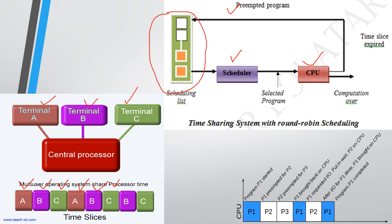Here the same thing is shown with another example. The process P1 starts executing first. When the time slice gets over, P1 is preempted, and P2 gets executed. When the time slice for P2 gets expired, P2 is preempted for P3. Once the execution cycle of all three processes is over, P1 can be brought back on the CPU again.